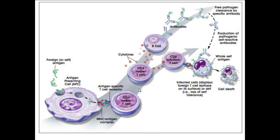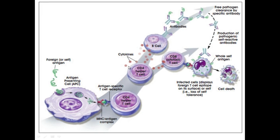Once the correct CD4 T cell has been found, it then releases a series of chemicals called cytokines. You can think of cytokines like a communication method between immune cells. The CD4 cell then brings in several different types of cells, but two main ones: T cytotoxic cells — and as the name would suggest, cytotoxic cells use toxins in order to break down pathogens.